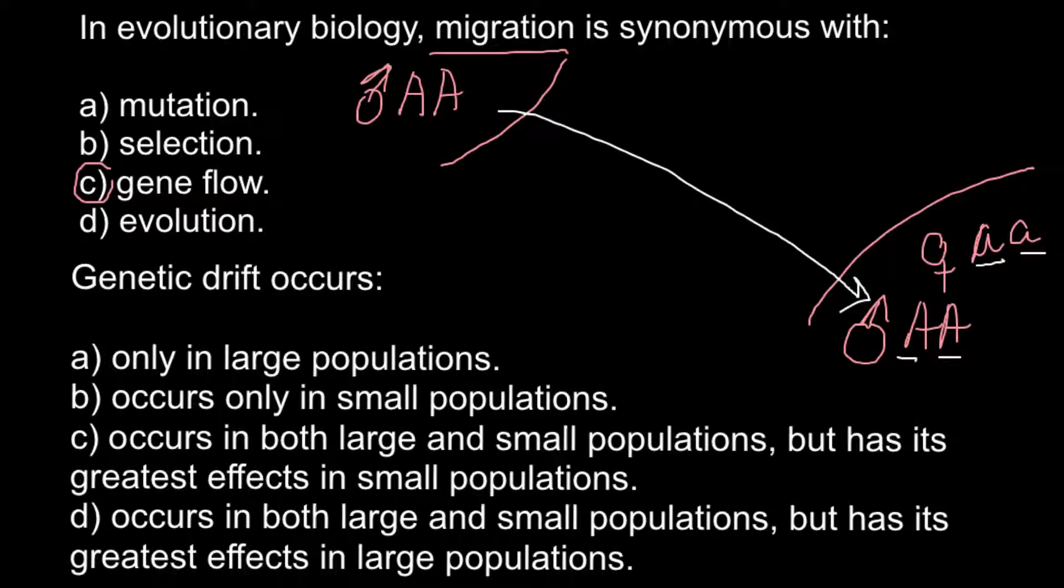before we had 100% recessive allele. And now, due to migration, due to gene flow, allelic frequencies here changed to 50% to 50%. So now we can move to the second question.